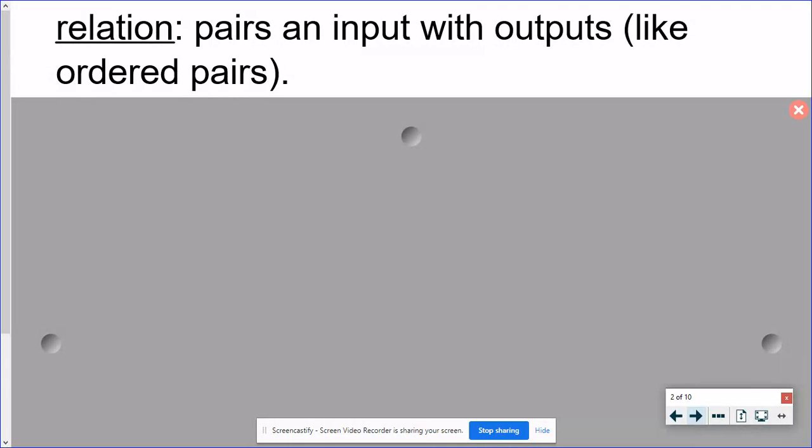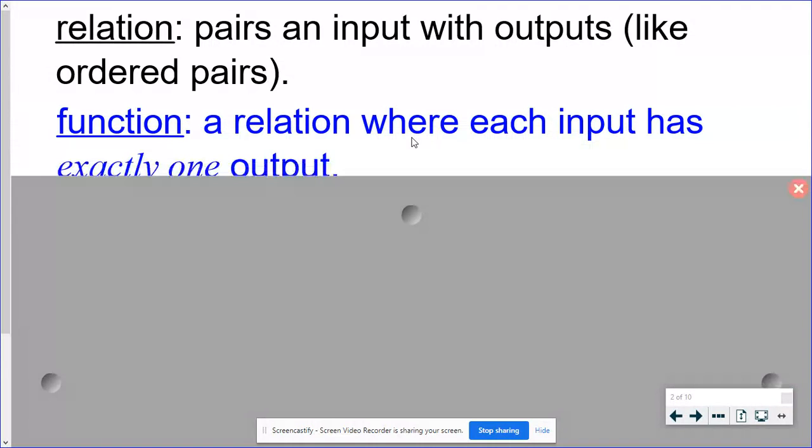A relation is just any time I have inputs and outputs that are getting paired up. A lot of times it looks like ordered pairs. Sometimes we have them in input output tables or XY tables. A specific kind of a relation is a function. In a function, each input has exactly one output.